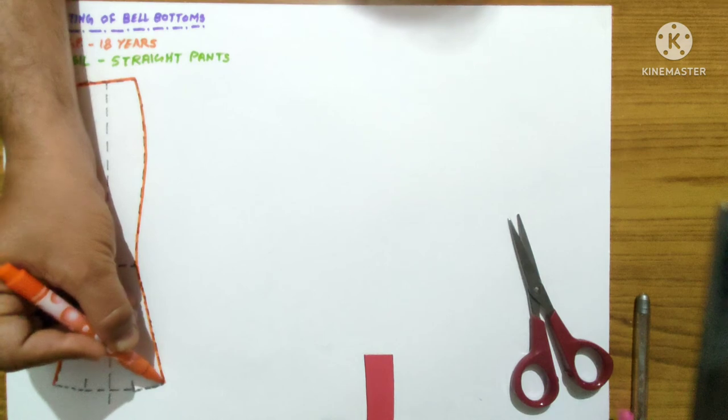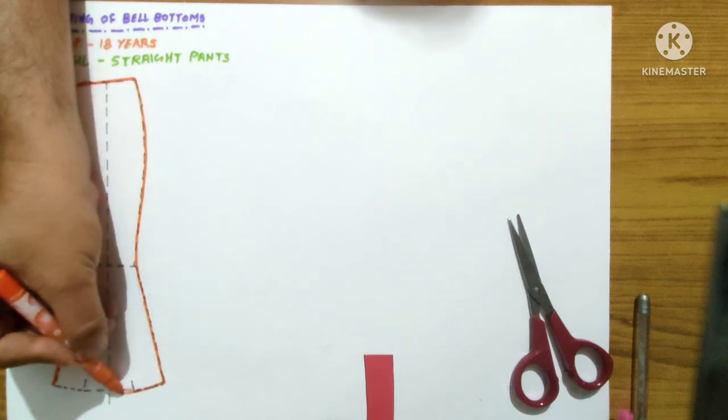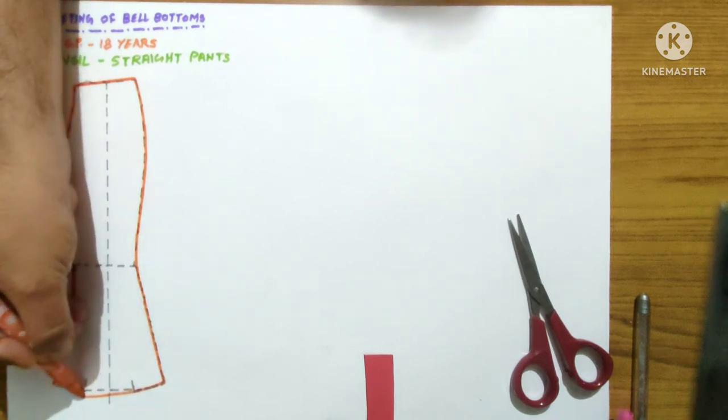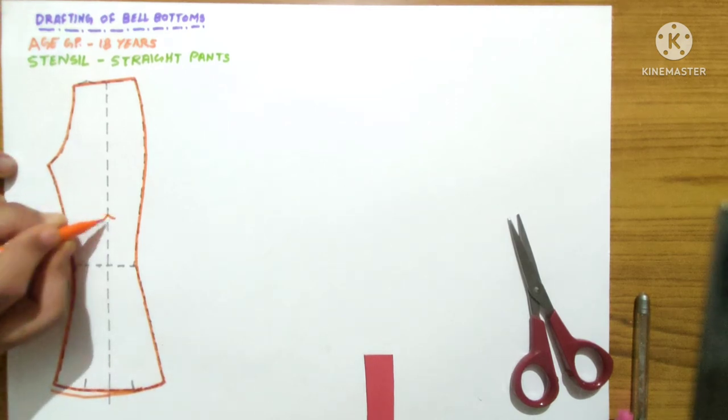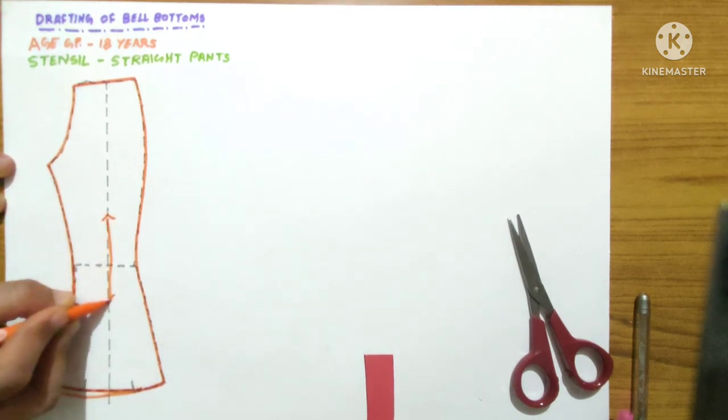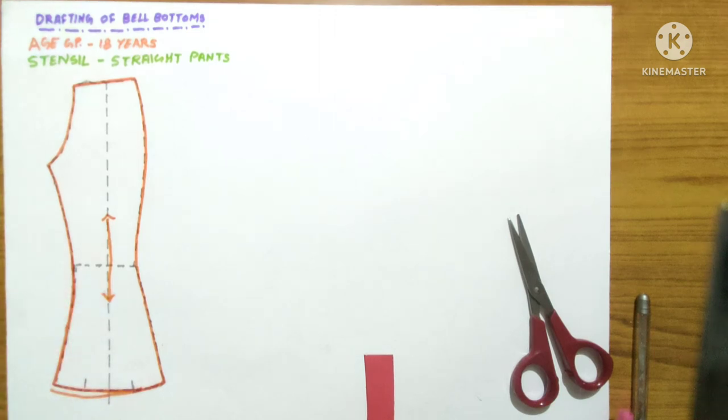And now we will mark the bottom. Oh, it's going wrong, sorry. We will just have to trace the lines, nothing more than that. And this is the pattern of bell bottom and this is the grain line. So this is the entire pattern.